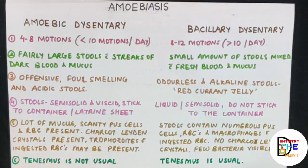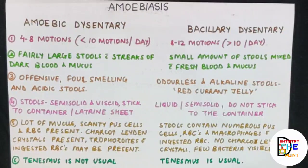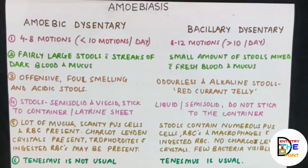Microscopically in amoebic dysentery: there is lots of mucus but fewer pus cells and RBCs; Charcot-Leyden crystals are present — these are hexagonal pyramidal shaped crystals found as evidence of parasitic infection, localized in primary granules of the cytoplasm of eosinophils or basophils; and trophozoites with ingested RBCs may be present. In bacillary dysentery: numerous pus cells and RBCs are present, macrophages with ingested RBCs, no Charcot-Leyden crystals, and few bacteria may be visible microscopically.